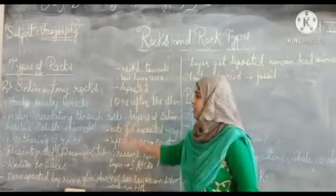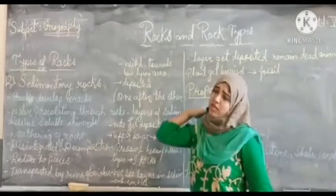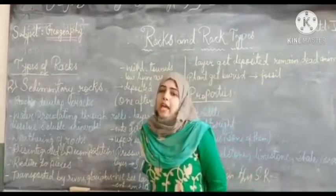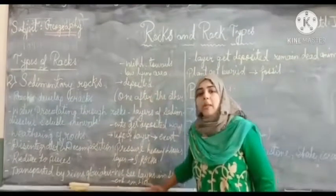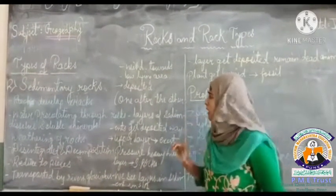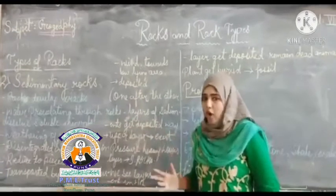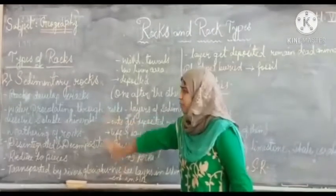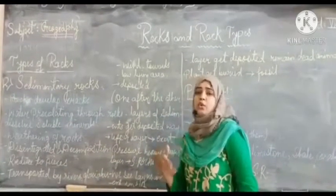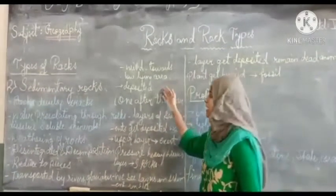These rocks are transported by rivers, glaciers, and winds to low-lying areas where they get deposited. They are deposited in very small piece form, one after the other. This is the process of how sedimentary rocks are formed and deposited in low-lying areas.